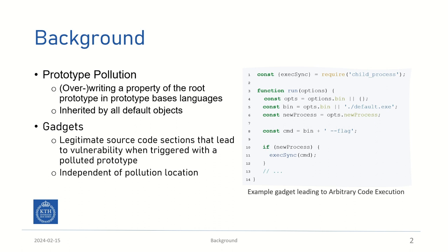Gadgets are legitimate source code sections that contain vulnerabilities when triggered with one or more polluted properties. The gadgets are mostly independent of the pollution, as long as the pollution happens before the gadget is triggered. In long-running Node.js applications, this means that they can happen at totally different times in totally different locations.